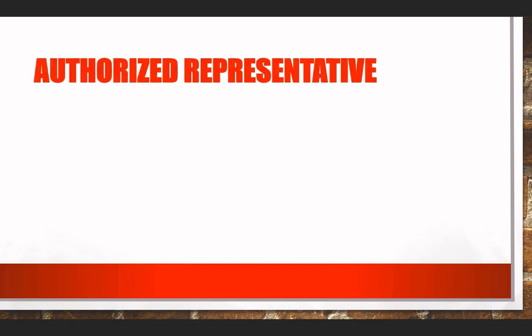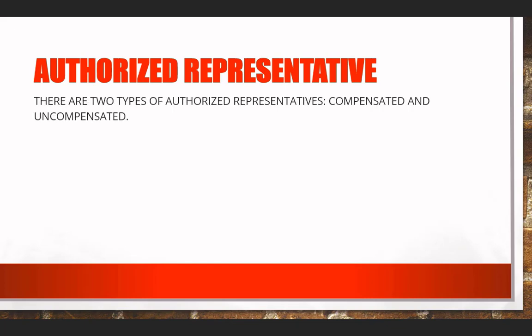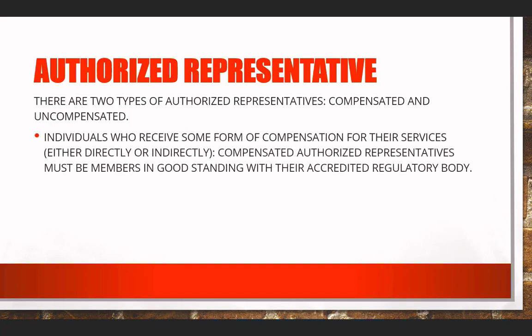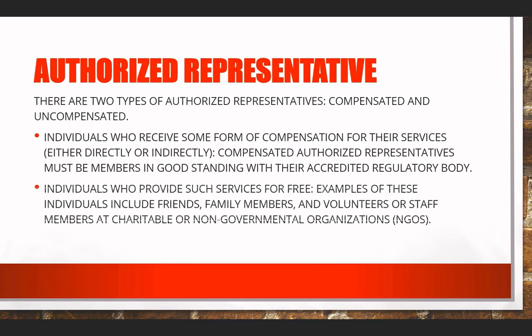Authorized representative: there are two types — compensated and uncompensated. Individuals who receive some form of compensation for their services, either directly or indirectly, are compensated authorized representatives and must be members in good standing with their accredited regulatory body. Individuals who provide such services for free include friends, family members, and volunteers or staff members at charitable or non-governmental organizations.